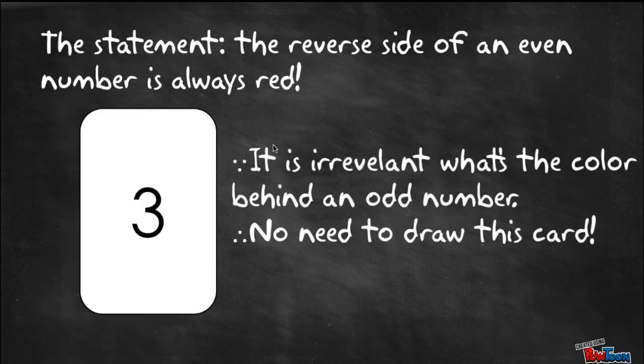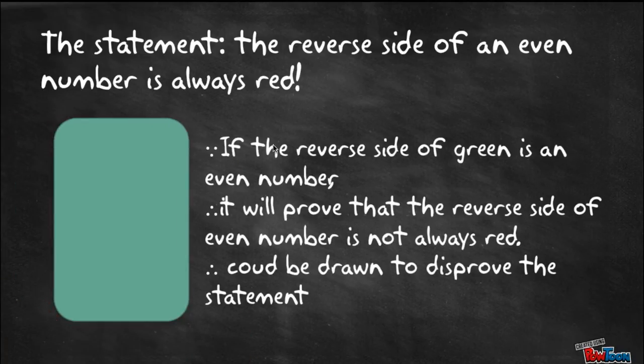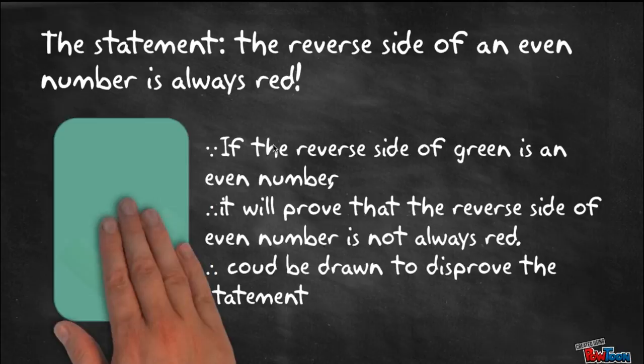In addition to this, knowing the color behind an odd number is also irrelevant, so we shouldn't draw this card either. However, if the reverse side of a green card is an even number, it will prove the reverse side of an even number is not always red. So we definitely need this green card to test our statement.